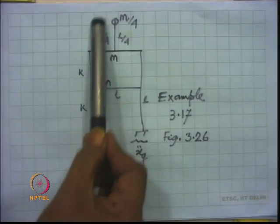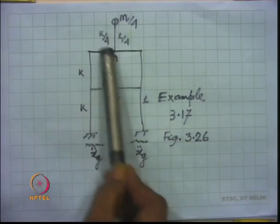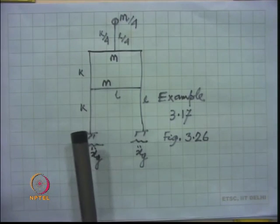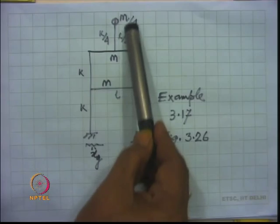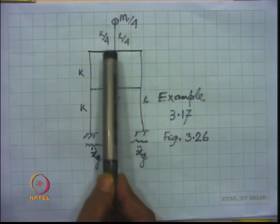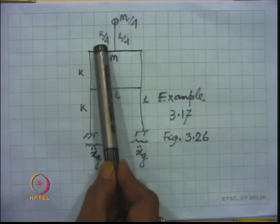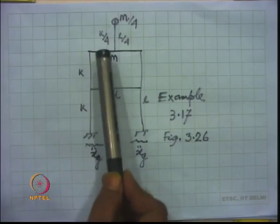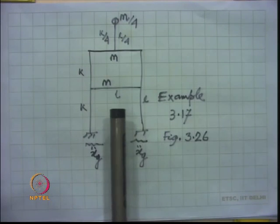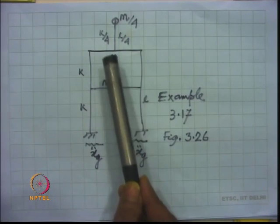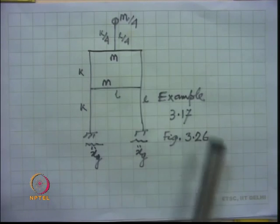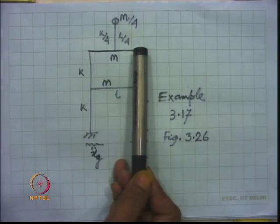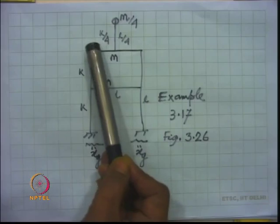This problem is simplified by using a single-degree-of-freedom system. However, for a piping system with multiple supports, one can assume the same absolute acceleration time history acts at all supports, obtain the response spectrum, and carry out the usual response spectrum method of analysis for the piping system.